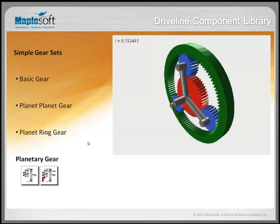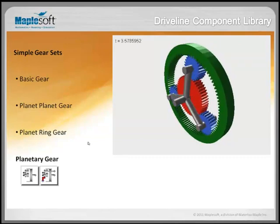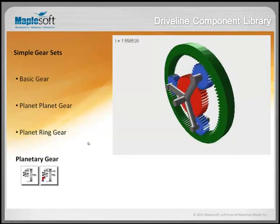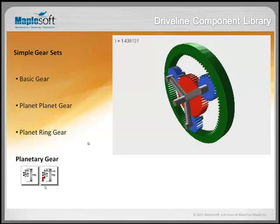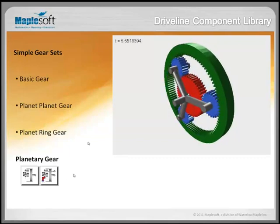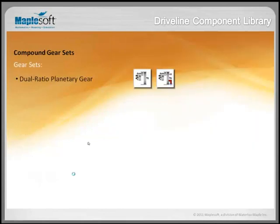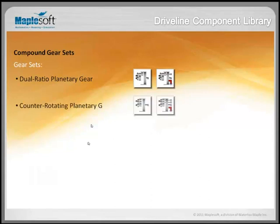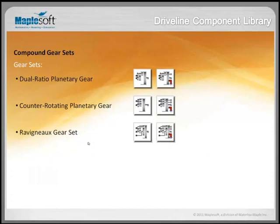There are two more planetary gear variations: the dual ratio planetary gear, where you define individual ratios for the planet-sun and planet-ring, and the counter-rotating planetary gear, which has an extra set of planets between the outer planet and the sun that changes the direction of rotation. More complex but well-known gear sets are included in the driveline library, like the Ravigneaux gear set, the CRCR gear set (CRCR standing for crown ring, crown ring), and the Simpson gear set.